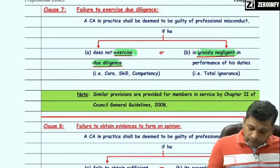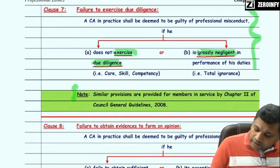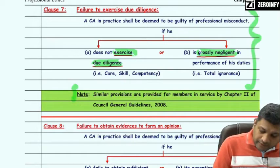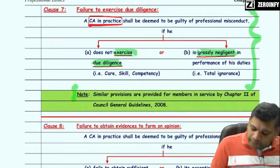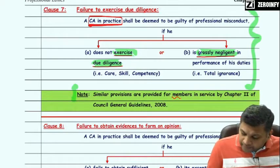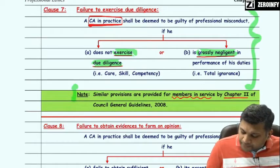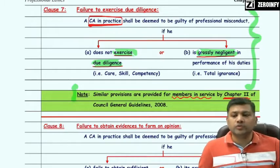These provisions are in relation to a practicing CA. Similar provisions also exist for a member in service under Chapter Number 2 of Council General Guidelines 2008.